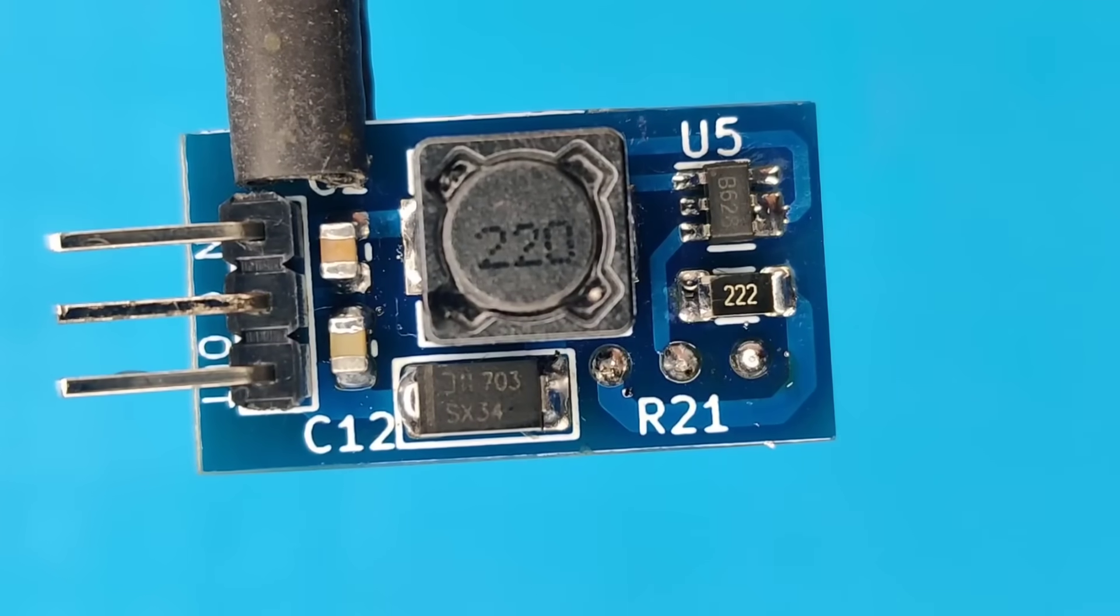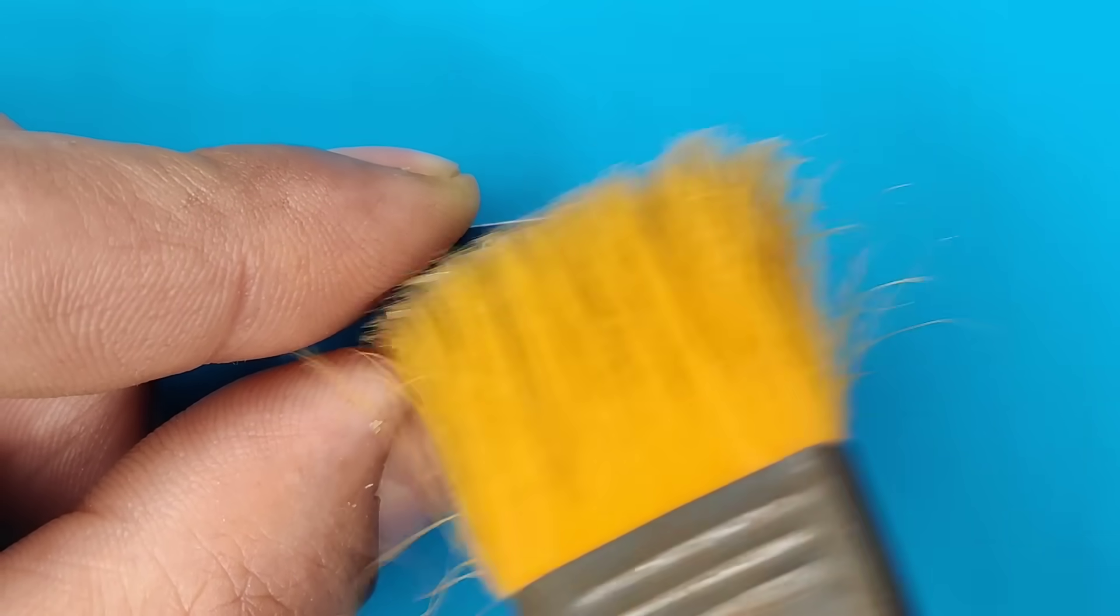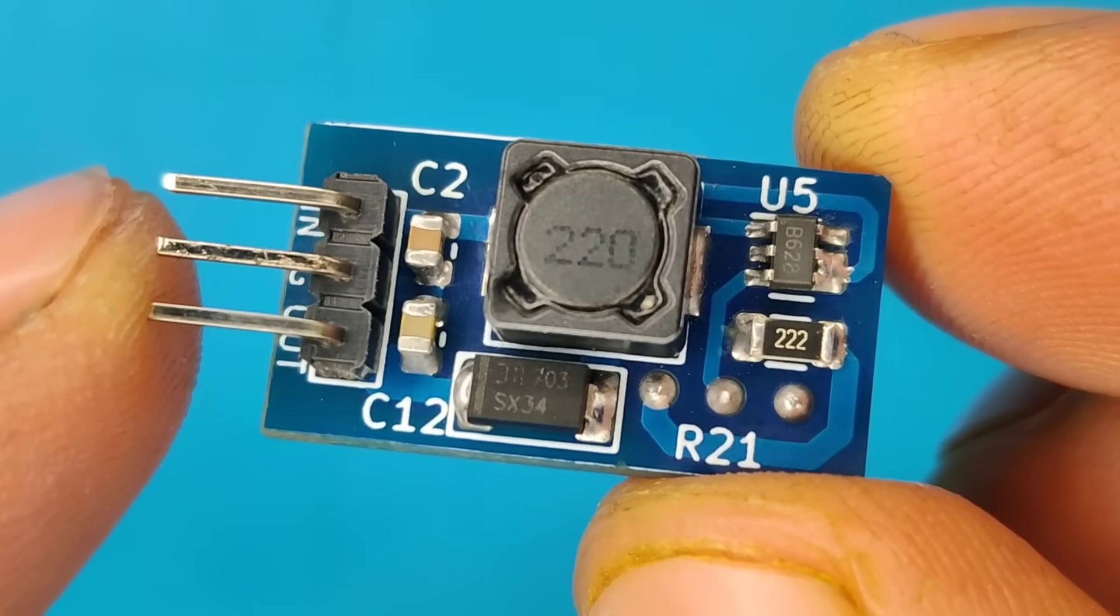After completing the soldering process, I cleaned the PCB with isopropyl and now our PCB looks nice and clean.